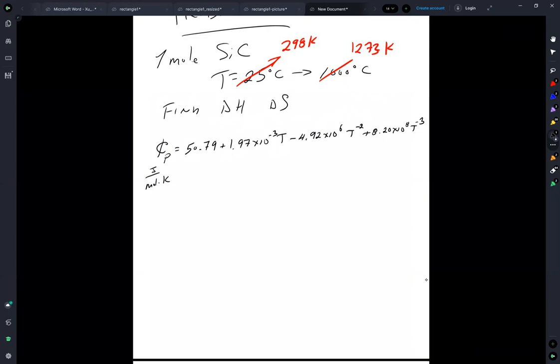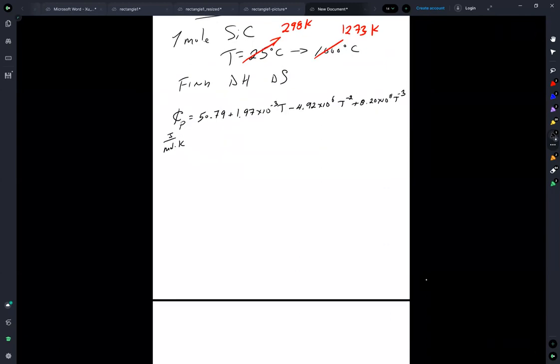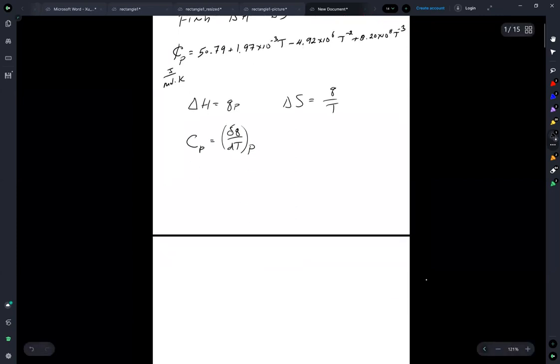Okay, well, this problem centers around recognizing that the change in the enthalpy is the constant pressure change in the heat and the change in the entropy is Q over T. And, of course, we have Cp is equal to DQ over DT at constant pressure. Okay, well, that means that the problem becomes integrating.